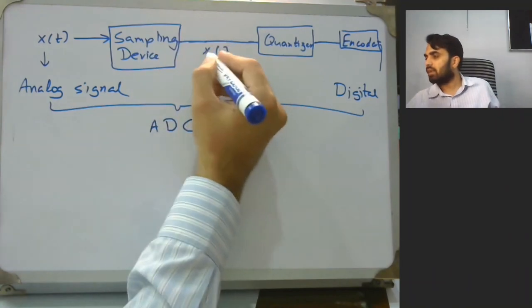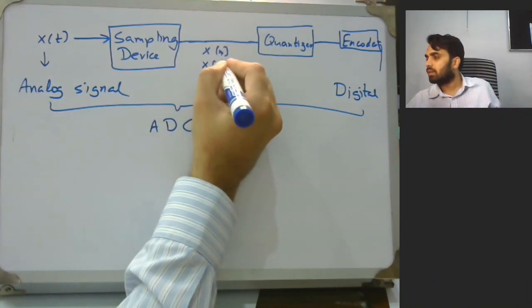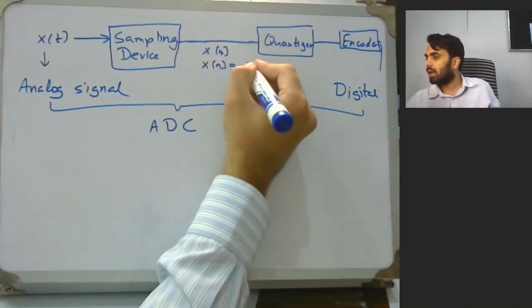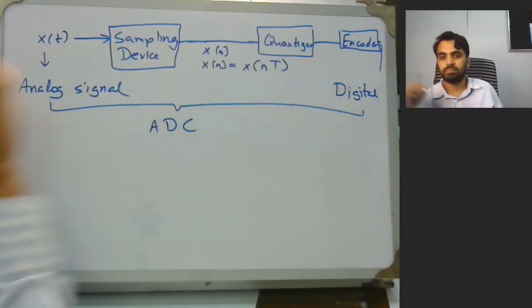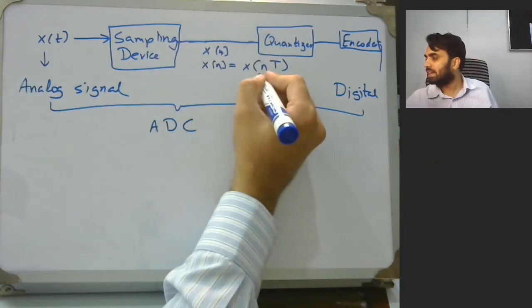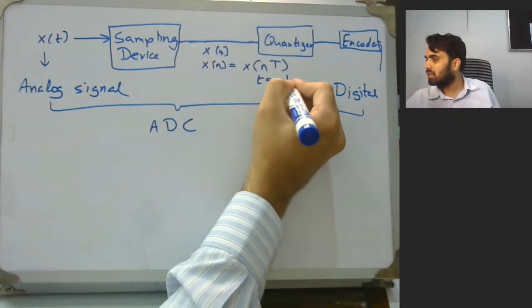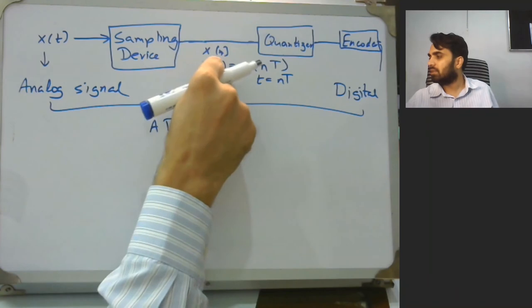Note that this x of n is equivalent to x of nT, where n is the integer and T is the time. That is, when t is equal to nTs, we are having this value x[n].